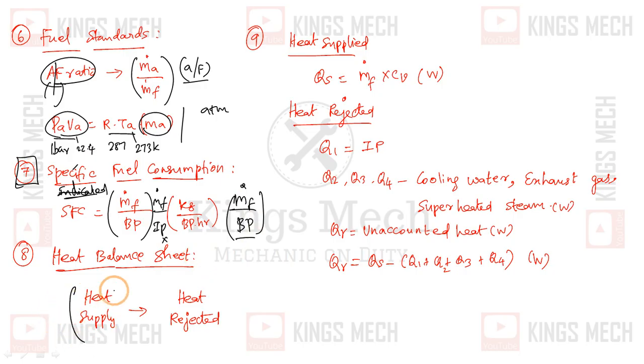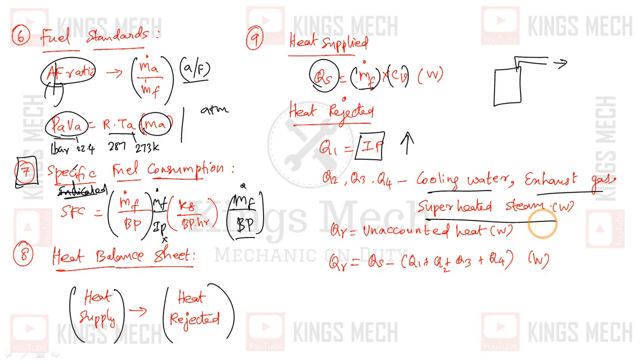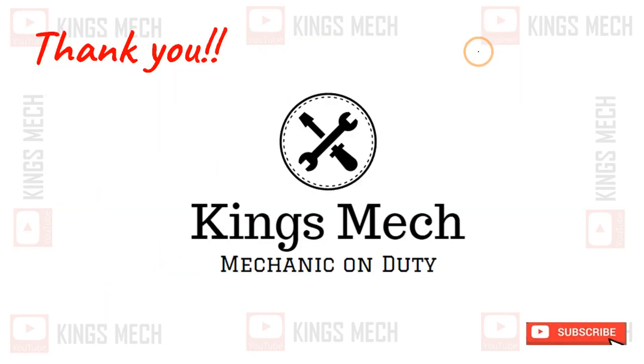Heat balance sheet: heat supplied equals heat rejected. Heat supplied equals mass flow rate times calorific value. Heat is rejected through cooling water and exhaust gas removal. The exhaust gas leaves the engine at high temperature, releasing heat. The heat balance equation accounts for all energy flows in the system.